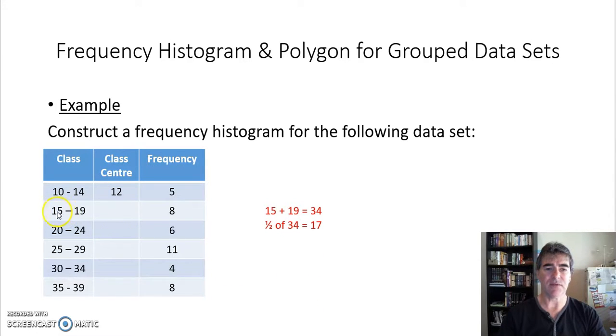So our next class is from 15 to 19, so 15 plus 19 is 34, half of 34 is 17, and we put that in there for our class center. Do that for the next class: 20 plus 24 is 44, half that's 22. Or remember we can use our fraction template on our calculator, add the scores in the numerator and divide by 2, and that's doing exactly the same thing.